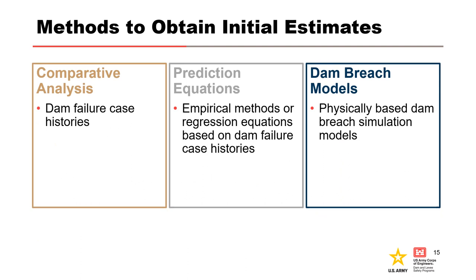Potential breach characteristics can be estimated in several ways, including: comparative analysis, which is comparing your dam or levee to historical failures of similar size, materials, and water volume; regression equations, which are equations developed from historical failures to estimate peak outflow or breach size and development time; utilization of velocity or shear stress versus erosion rates; and physically-based computer models or software that attempt to model the physical breaching process using sediment transport or erosion equations, soil mechanics, and principles of hydraulics.